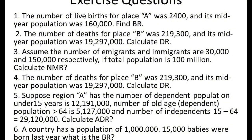Number four is similar to question two, so let us skip it. Number five: suppose Region A has the number of dependents. The dependent population under 15 years is...